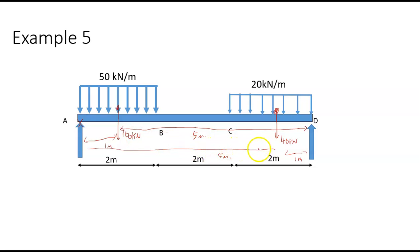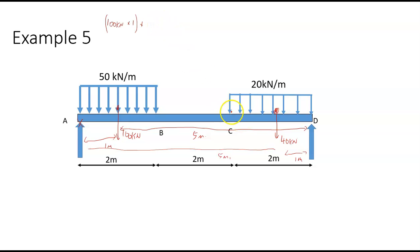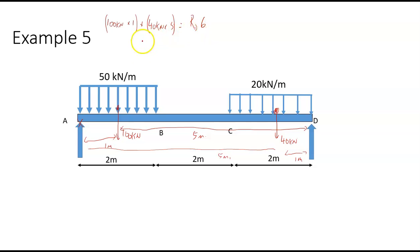The clockwise moments would be 100 kilonewtons multiplied by one, plus 40 kilonewtons multiplied by five, and that's equal to R_D times six. So R_D is equal to 50 kilonewtons.